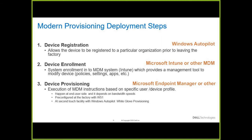Whether it's an iPhone, Android, or PC, device enrollment works transparently. For BYOD devices, users are attached to a BYOD profile — for example, enabling only Exchange and Outlook with associated permissions and a password policy. For corporate-owned devices, the appropriate corporate policy is applied. All policies are configured in the Intune console.